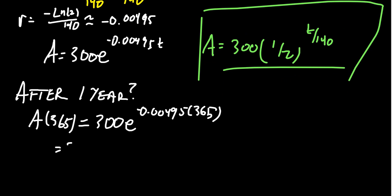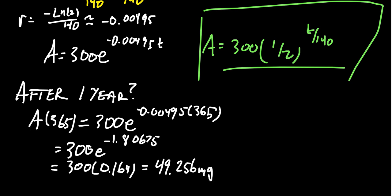We're trying to figure out A(365). This would look like 300 times e to the negative 0.00495 times 365. If you multiply together the exponent, you take the rate times 365, that'll be approximately negative 1.80675. If you take e to that power, that'll be approximately 0.164, which when you times that by 300 is approximately 49.256 milligrams.